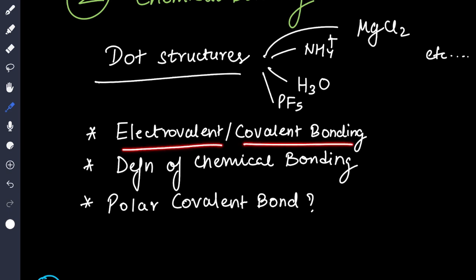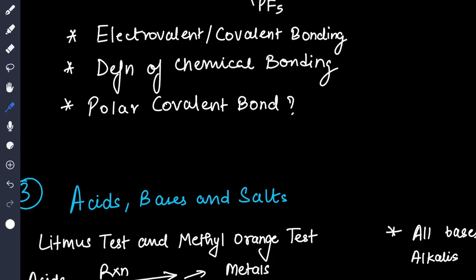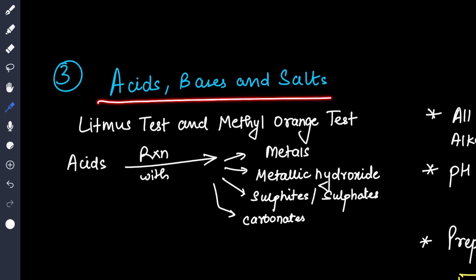Electrovalent and covalent bonding, the difference between this. You very well know that electrovalent means transfer of electrons and covalent means sharing of electrons. Then the definition of chemical bonding, what is polar covalent bond.